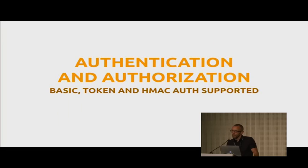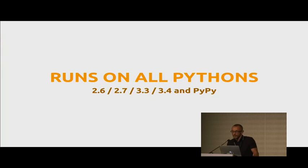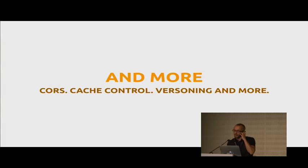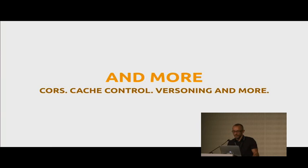There is support for authentication and authorization — basic auth, token authentication, and HMAC, which is basically what Amazon S3 uses. It runs on all kinds of Pythons, including 3.4 and PyPy. There is API versioning — you can have endpoint version 1, version 2, version 3 of your API. It's BSD licensed and open source — you can do whatever you want with it.